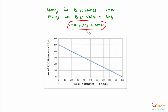This is the graph for the linear equation 10x + 20y = 1000, and we can see that it is a straight line. This confirms that the equation we obtained is indeed a linear equation.